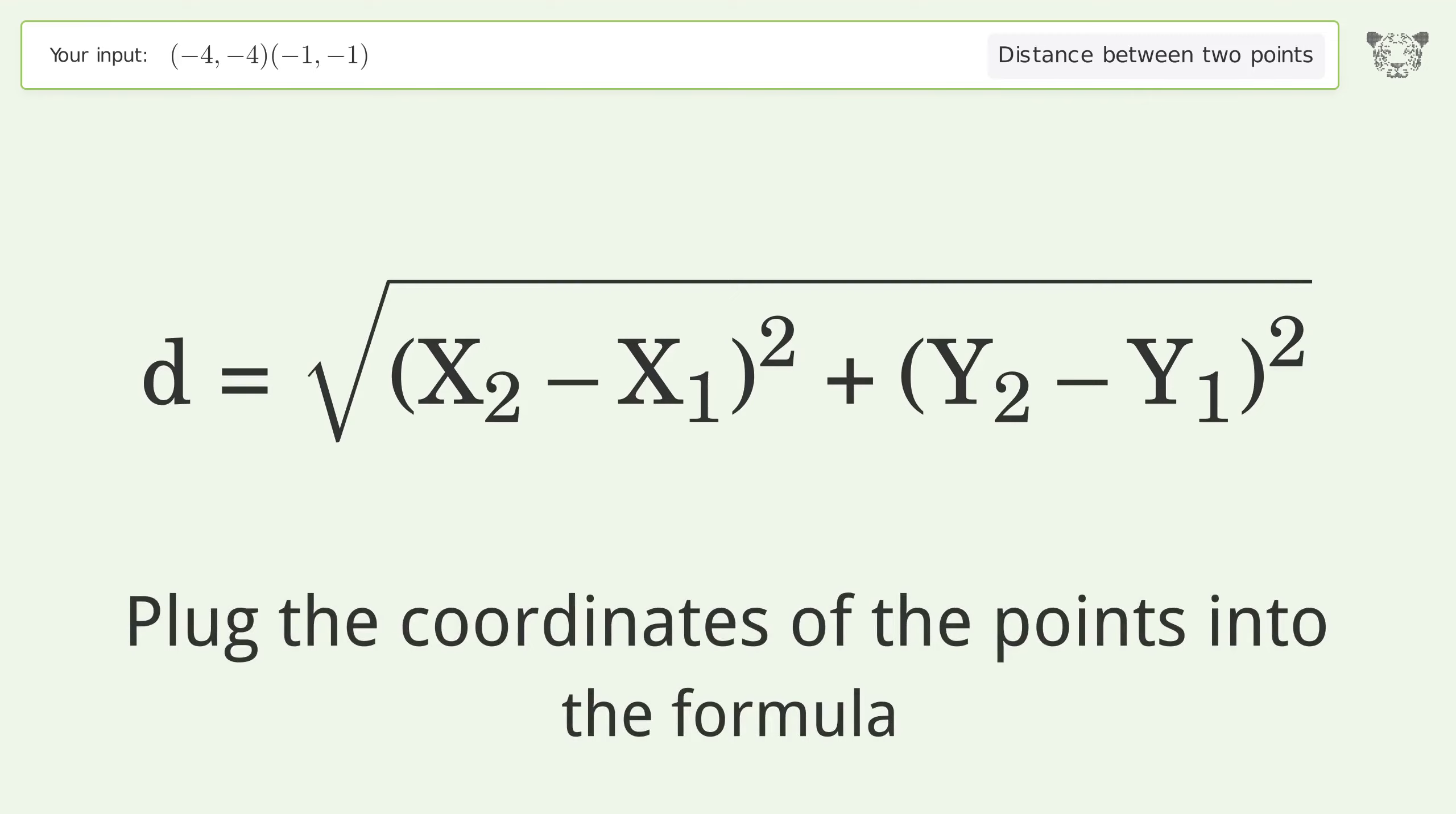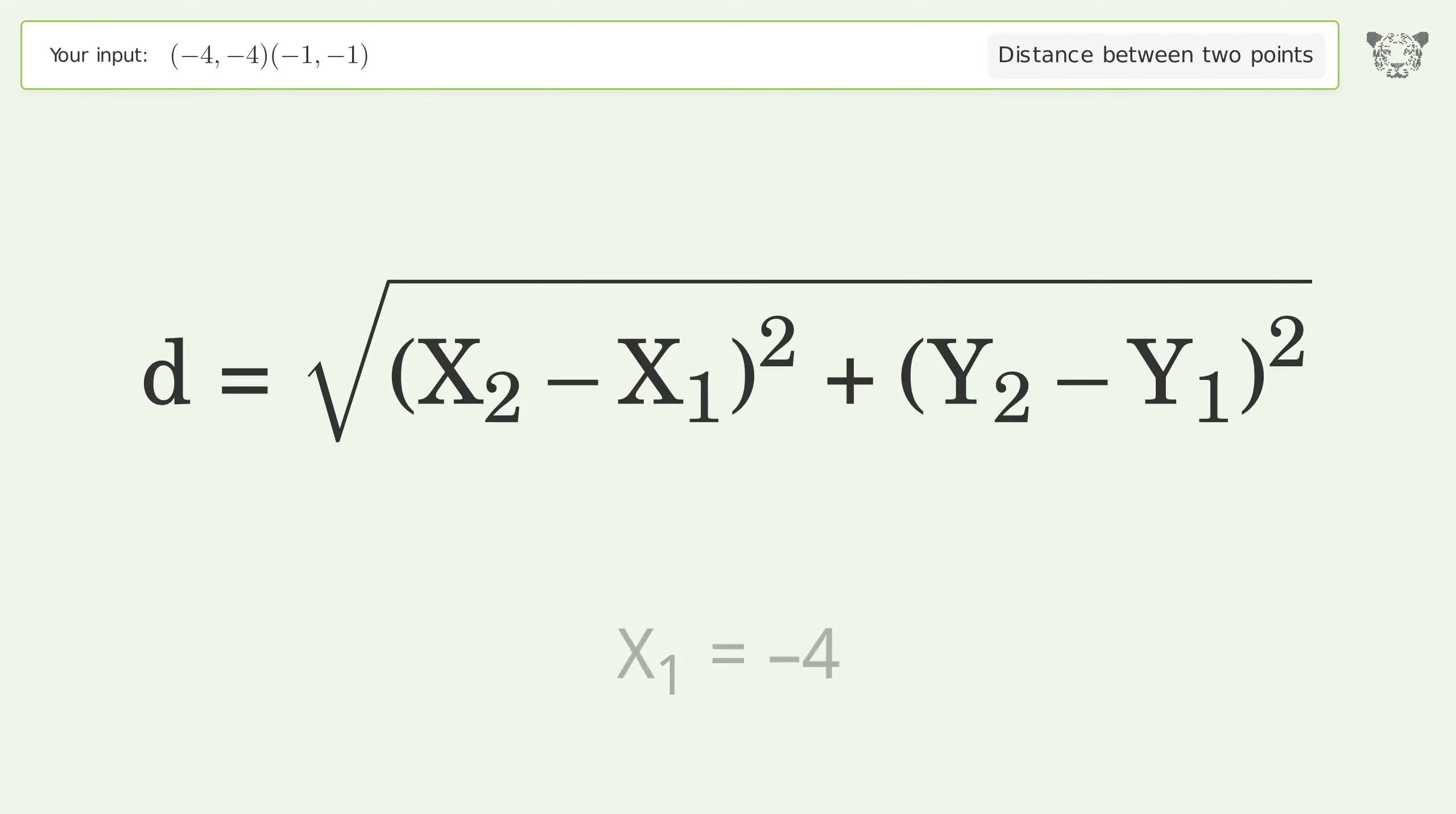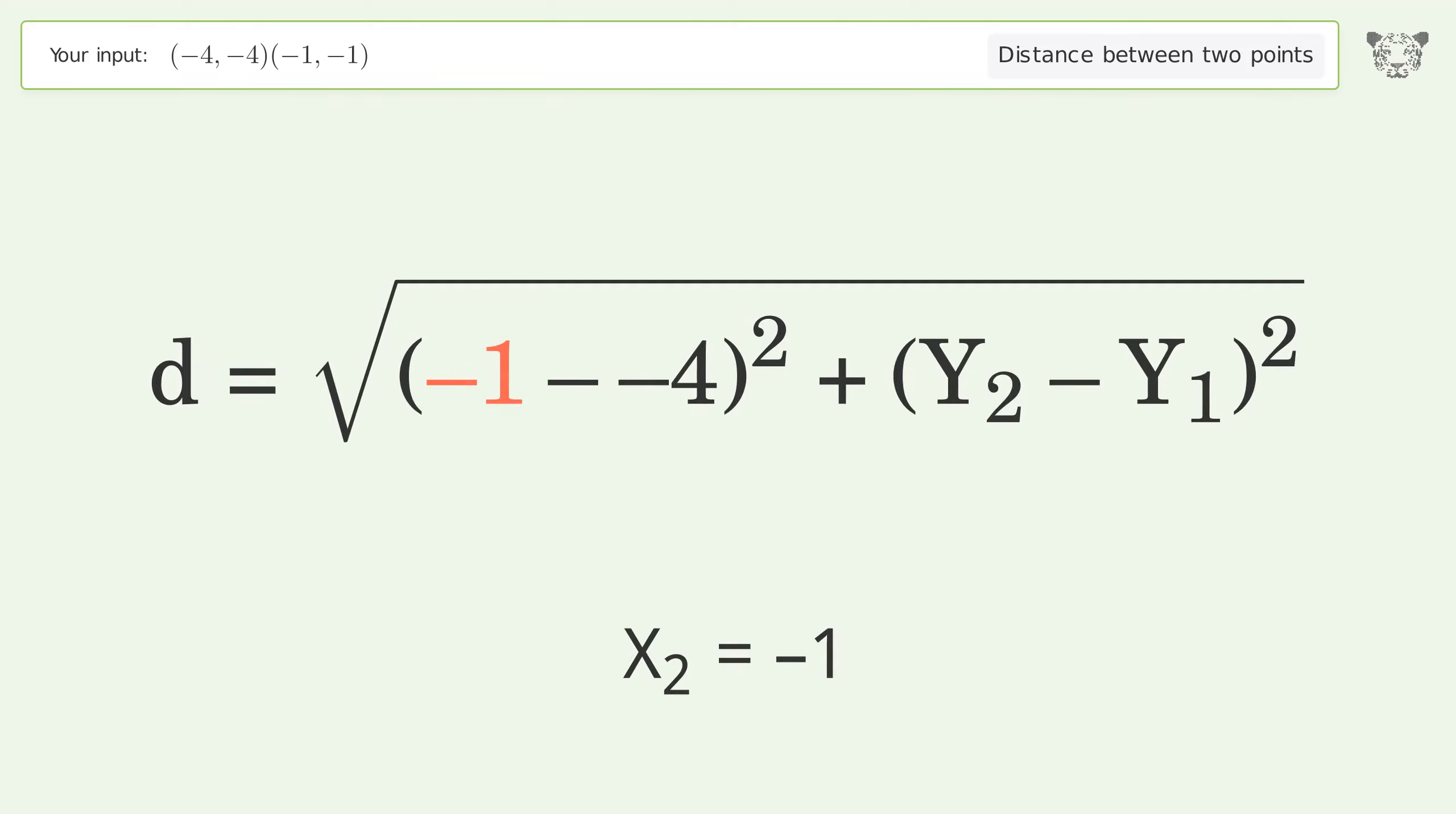Plug the coordinates of the points into the formula. x1 equals negative 4, x2 equals negative 1, y1 equals negative 4, y2 equals negative 1.